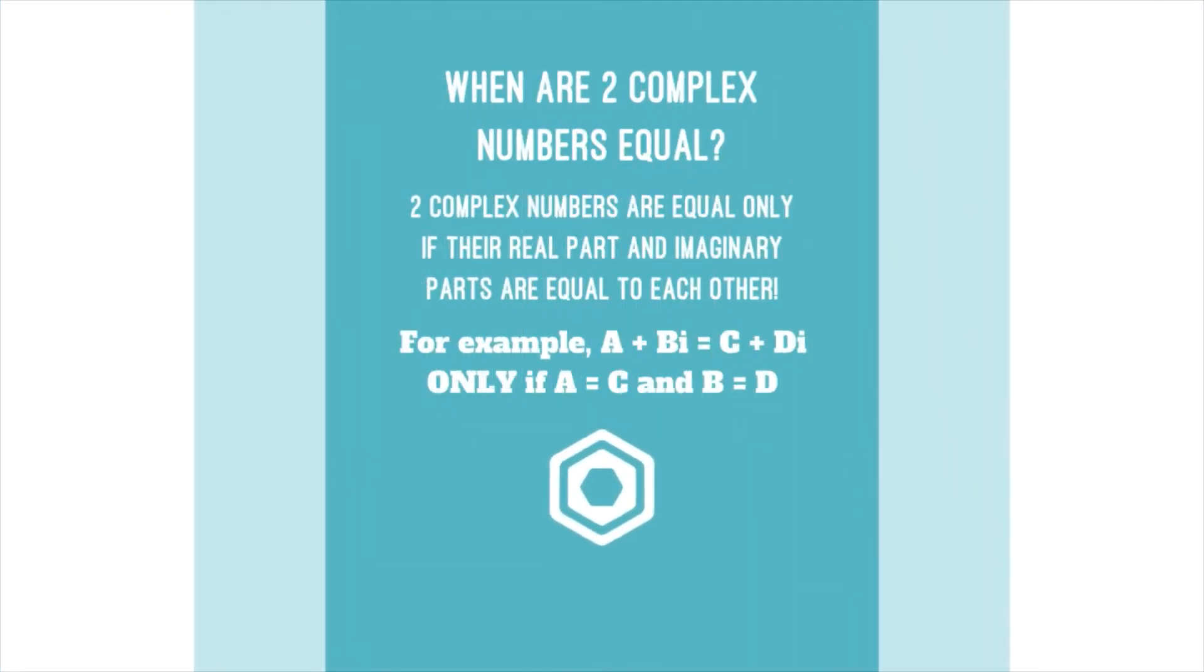When are two complex numbers equal? Two complex numbers are equal only if their real and imaginary parts are equal to each other. For example, a + bi equals c + di only if a equals c and b equals d.